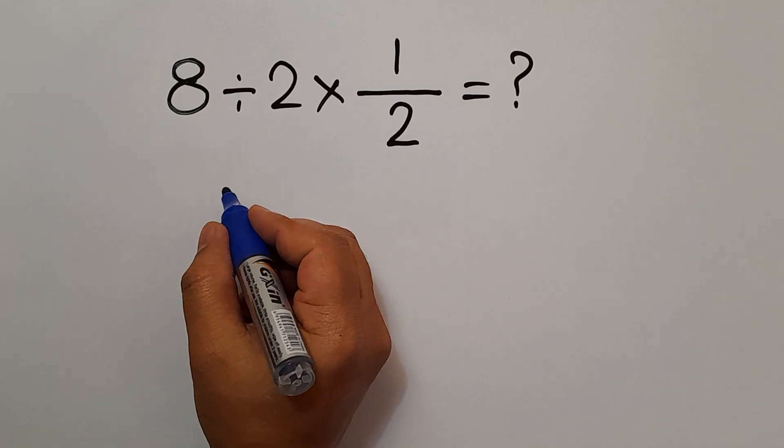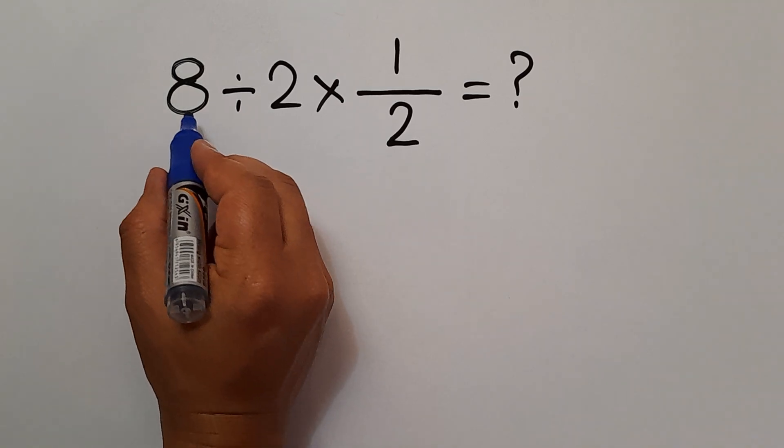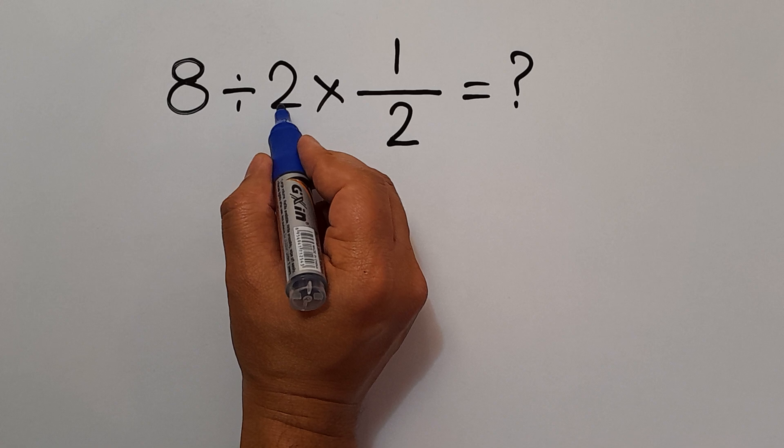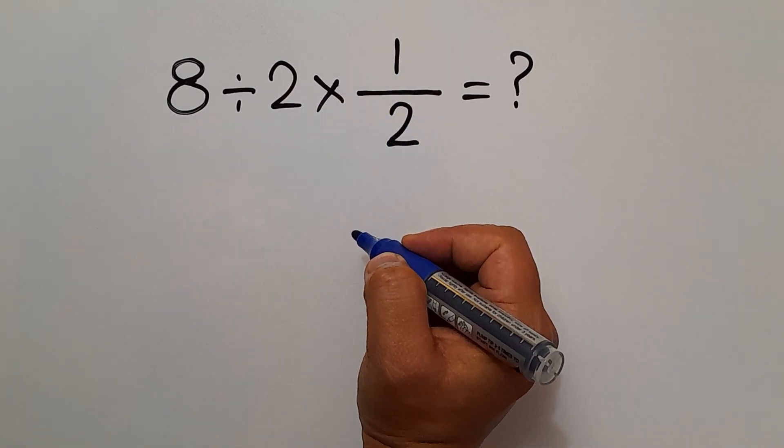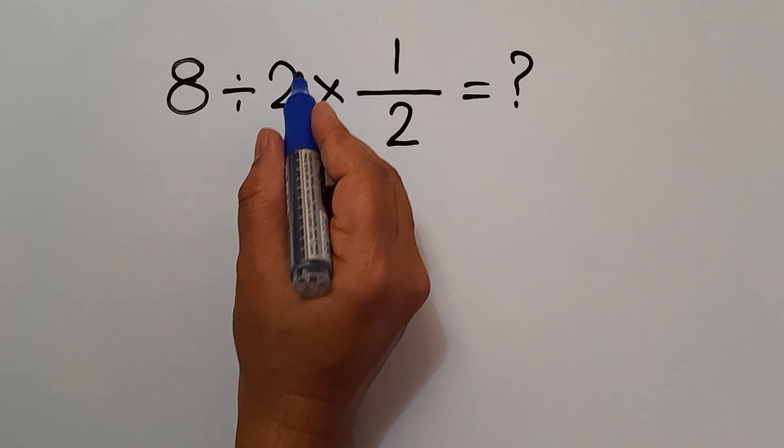Hey guys and welcome to this video. In this video we want to calculate this expression: 8 divided by 2 times 1 over 2. Are you ready to solve? Let's go ahead and get started. We can easily cancel these two and these two.